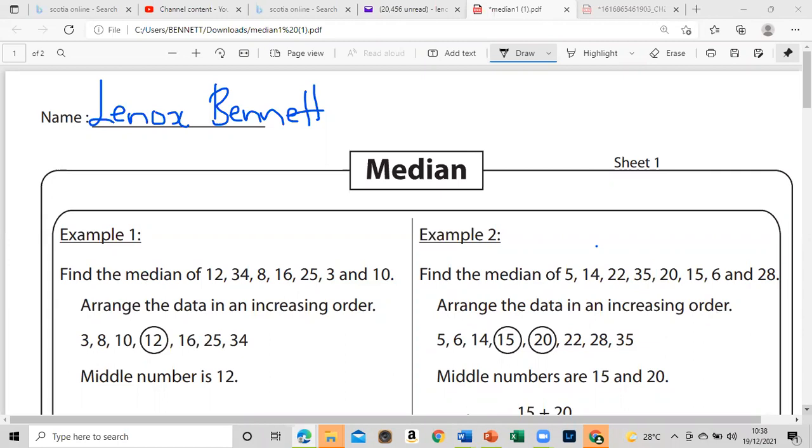This is basically a tutorial. Example one says find the median of 12, 34, 8, 16, 25, 3, and 10. As we discussed in class, we must arrange them in ascending order, meaning we arrange them from the smallest value to the largest value.